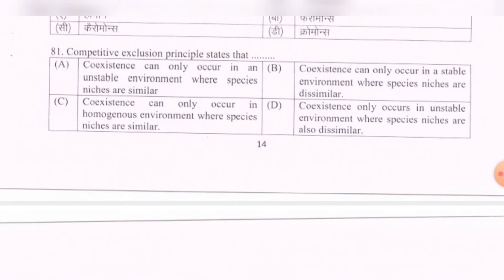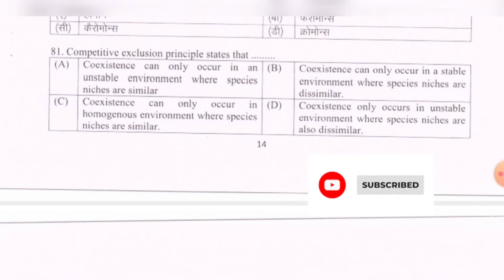Next question: The competitive exclusion principle states that — options are: co-existence can only occur in an unstable environment where species niches are similar; co-existence can only occur in a stable environment where species niches are dissimilar; co-existence can only occur in a homogeneous environment where species niches are similar; co-existence only occurs in an unstable environment where niches are dissimilar. The correct option is B.